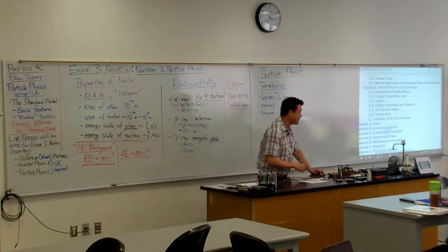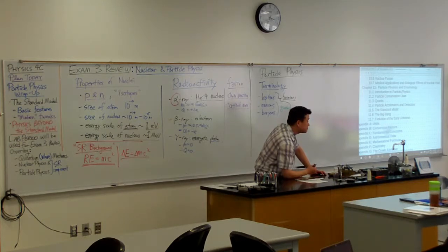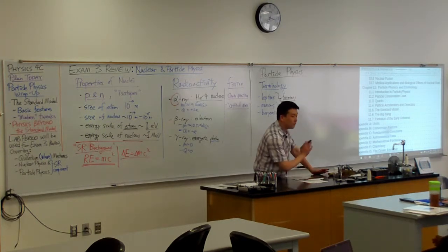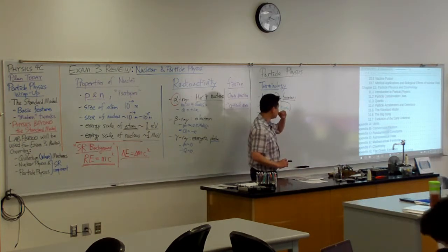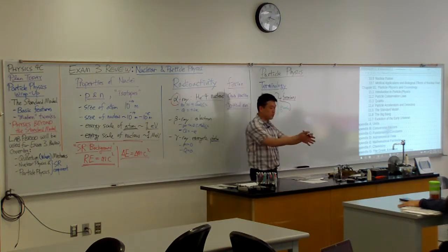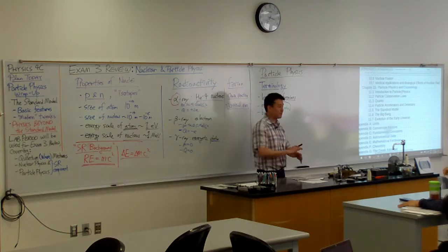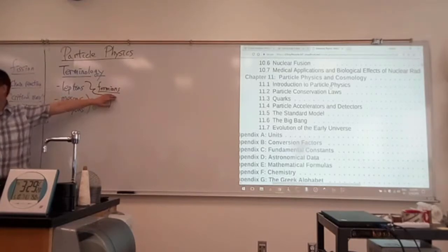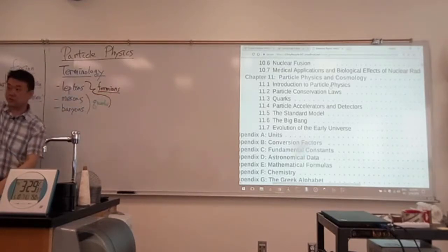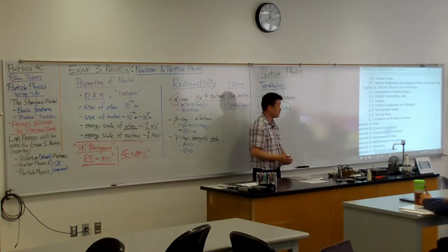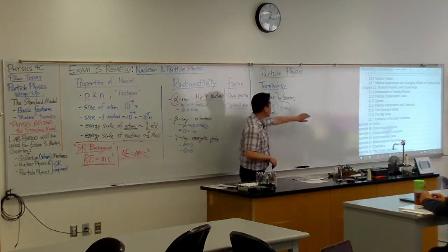Fermions happen to be the ones that make up matter, but that's not a definition. Fermions obey the Pauli exclusion principle, which means you cannot put many of them into a single space — and one property of matter is that it takes up space, which is consistent with the property of fermions. Whereas with bosons like the photon, you can pile up as many as you want in one space because they can all share the same quantum number. What defines a fermion is its spin.